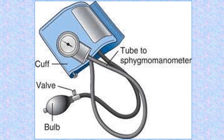Keep inflating until you feel no sound and no pulse. Then begin deflation at two millimeters of mercury per second — slowly, gradually deflating. Continue until you hear the first sound. That sound is the first Korotkoff sound, and this represents the systolic blood pressure reading. Continue deflating until the sounds completely disappear — that is the diastolic blood pressure.